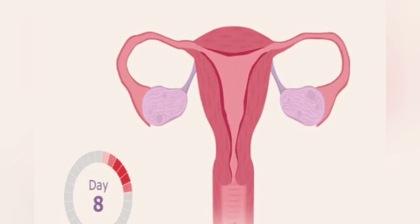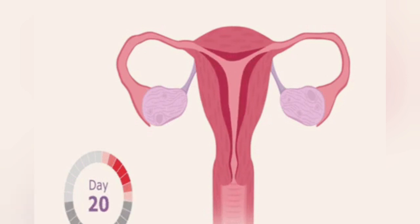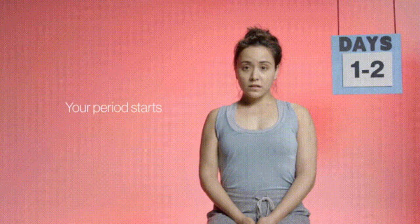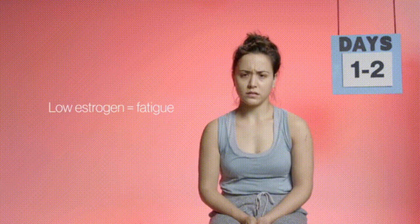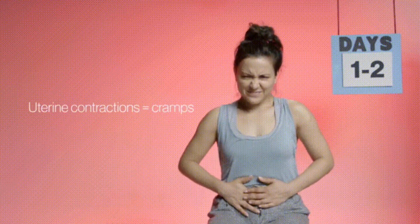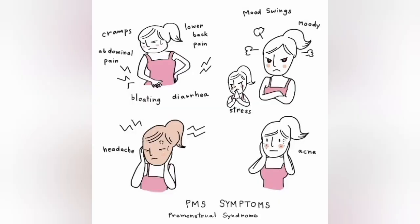If pregnancy does not occur, estrogen and progesterone levels drop, the thickened lining of the uterus sheds, and the menstrual phase takes place, beginning the next menstruation cycle. During the menstruation phase, females may experience symptoms like cramps, headache, tiredness, mood changes, and lower back pain.